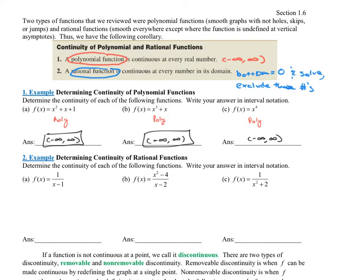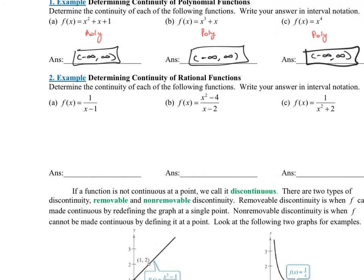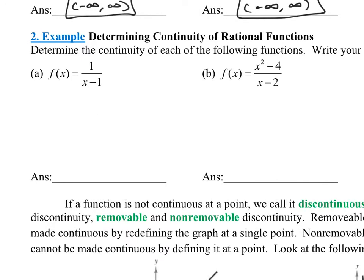Those are all polynomial functions, and the answer every time is negative infinity to infinity. Now let's move on to rational functions. Rational functions mean it's a fraction. What we do is set the bottom equal to zero — really, you're saying the bottom cannot equal zero. So we say x minus one cannot equal zero; add one to both sides and you get x cannot equal one.